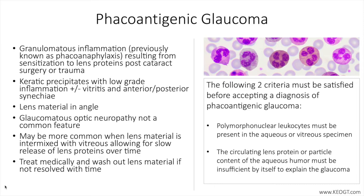Occurrence is now uncommon, less than 1% of cataract surgeries, after introduction of modern phacoemulsification techniques, which enhanced removal of most or all lens material at the time of cataract surgery. The immune response usually occurs within 2 weeks of surgery or trauma and involves an immune complex reaction mediated by IgG and the complement system.